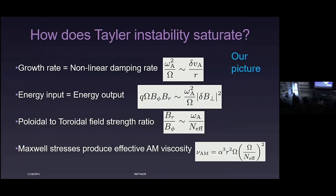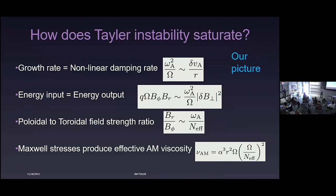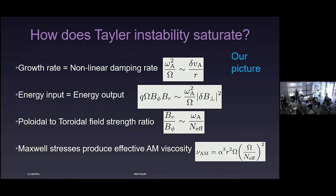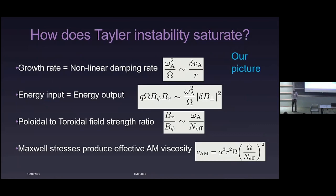Question about pre-main sequence observations: I'm not aware of asteroseismic core rotation measurements on the pre-main sequence. There was work by Constanze Swinz around 2014 measuring rotation rates of Delta Scuti stars on the pre-main sequence, though that sample may not have been extended since. If they're Delta Scuti stars, the measurements are probably weighted towards the surface, not core rotation rates.